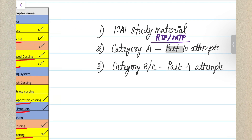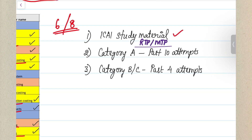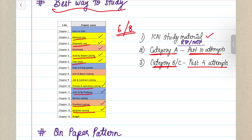After watching those videos, solve all your ICAI study material sums and RTP and MTP papers. For Category A chapters, try to cover all past 10 attempts' RTPs and MTPs so you are strongest in those areas. For the remaining B and C category chapters, any past three to four attempts would suffice. The bare minimum is your ICAI study material and past four attempts' RTPs and MTPs. If you can do more than that, that's great.